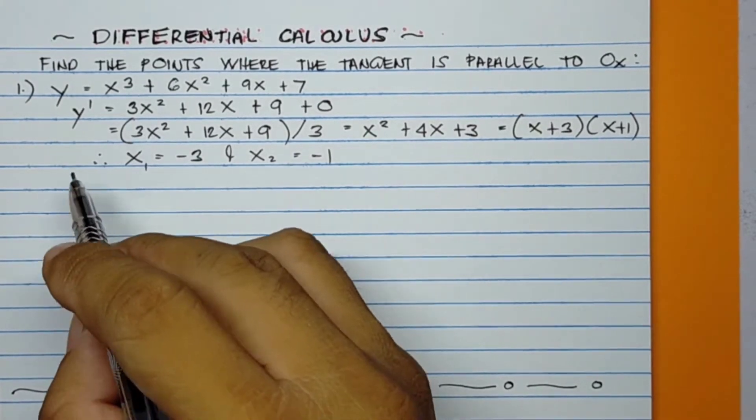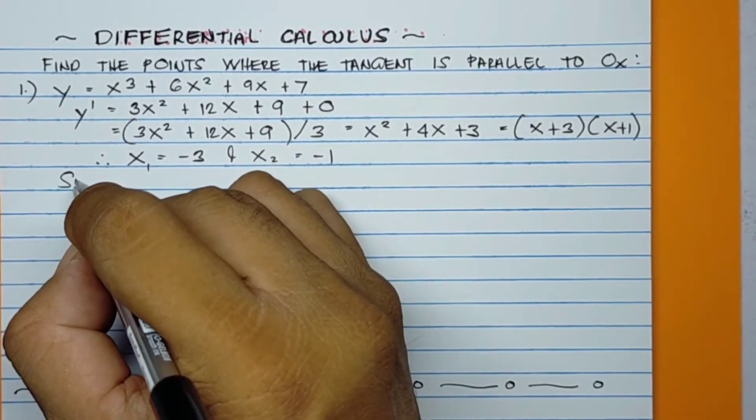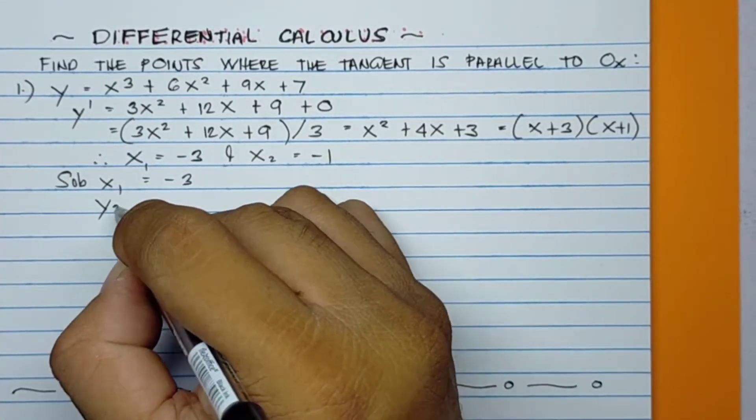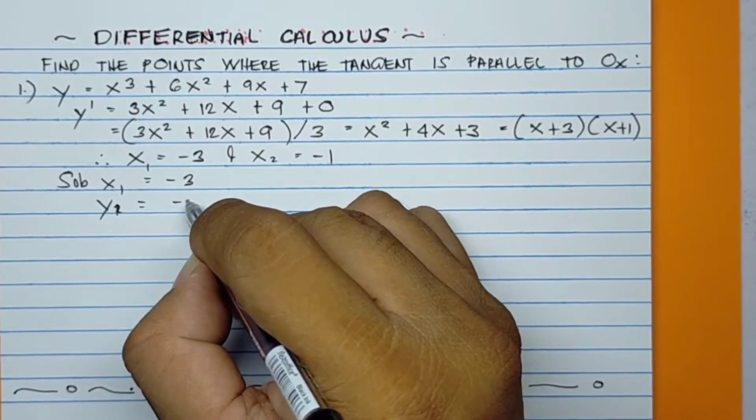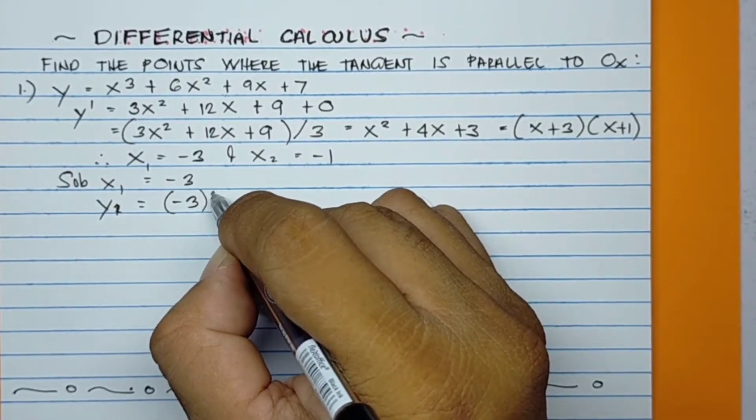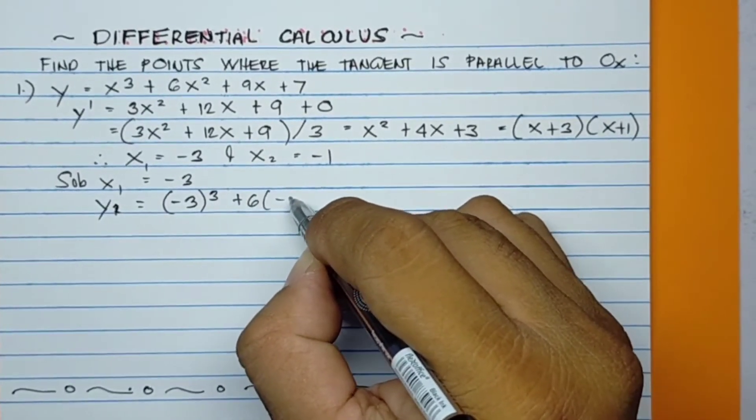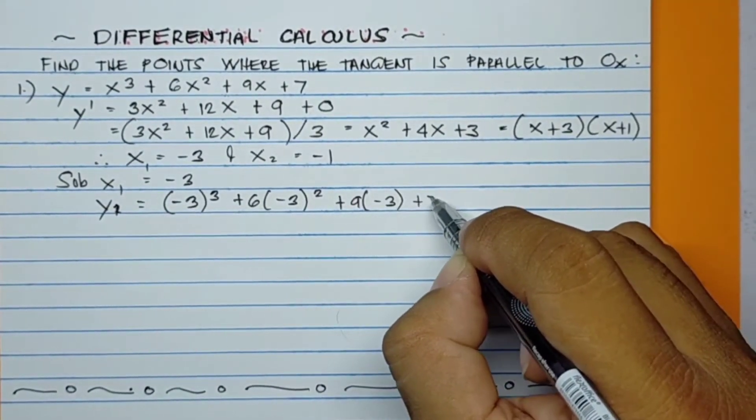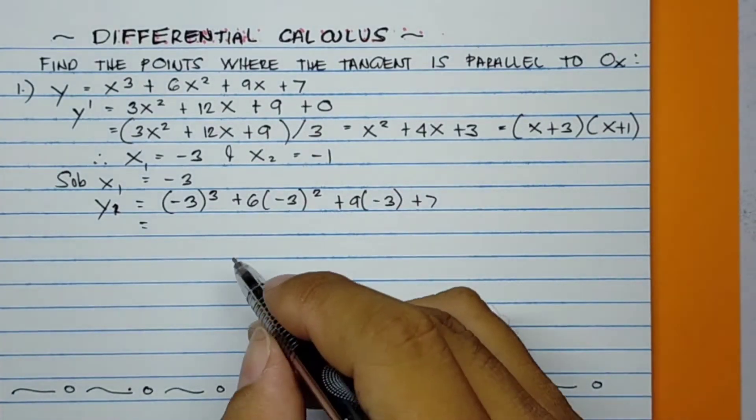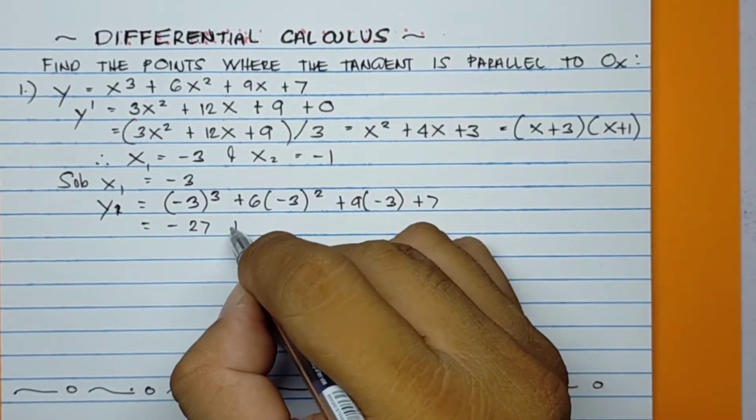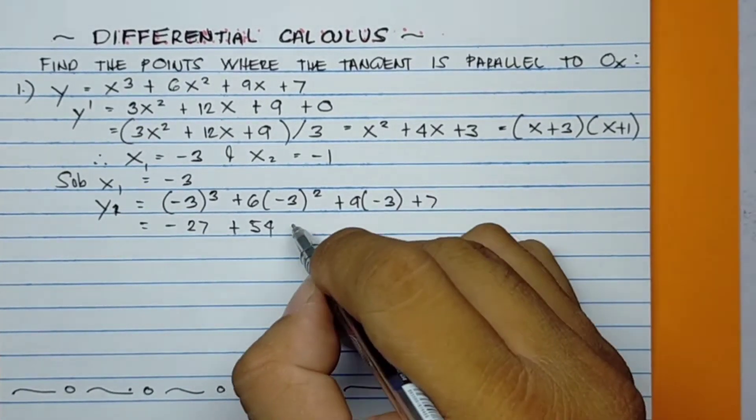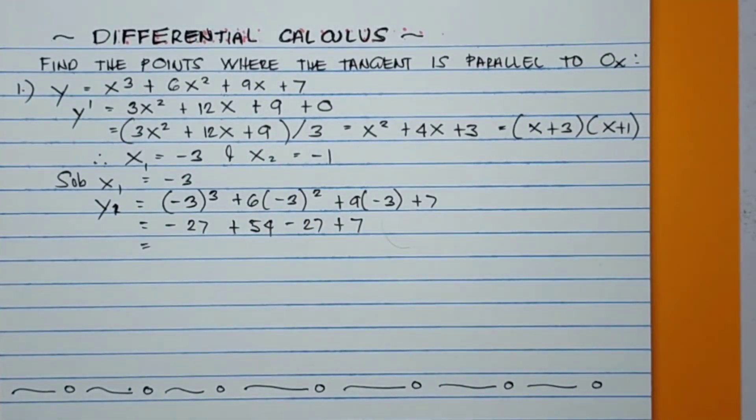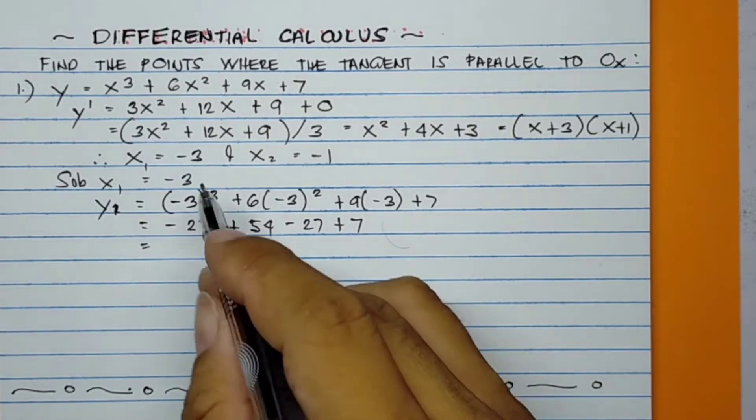Now we substitute these values to the original equation. Substitute x₁ = -3. So y₁ will be (-3)³ + 6(-3)² + 9(-3) + 7. This becomes -27 + 54 - 27 + 7. Therefore, y₁ = 7.